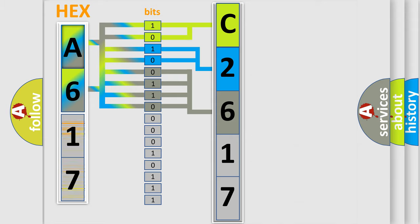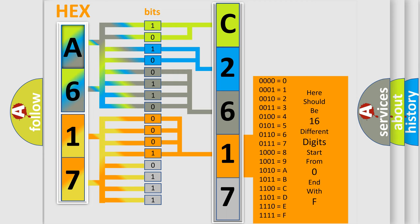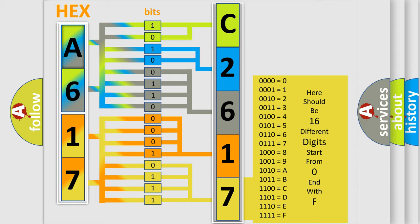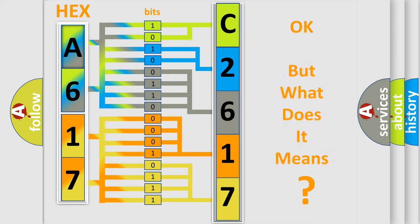The last bits of the first byte define the third character of the code. The second byte is composed of a combination of eight bits. The first four bits determine the fourth character of the code, and the combination of the last four bits defines the fifth character. A single byte conceals 256 possible combinations. We now know how the diagnostic tool translates the received information into a more comprehensible format.